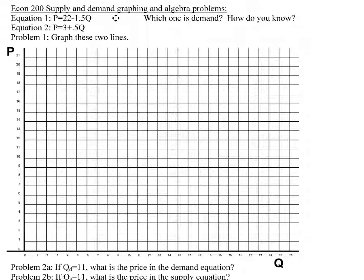Now we have one for demand and one for supply. I have a question here: which one is demand and how do you know? You know that the one with the negative slope is going to be demand because of the law of demand. It says that in order for people to want to buy a larger quantity, price has to go down.